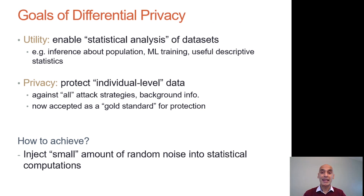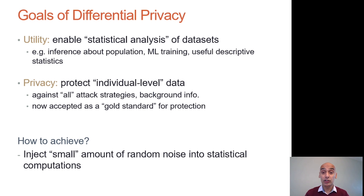Differential privacy offers such a quantitative theory. In doing so, it aims to allow statistical analysis — such as drawing inferences about a population from which a data set is drawn, and training machine learning models that generalize — while mathematically ensuring that individual-level data is not leaked. It is achieved by injecting small amounts of random noise in statistical computations to obscure the effect of each individual, while still allowing useful statistical signal to come through.